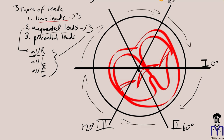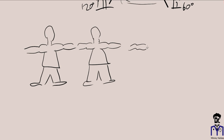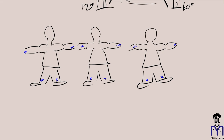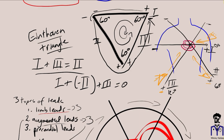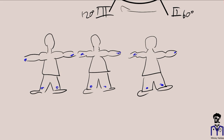With Goldberger's leads, one electrode is chosen to be positive and the average of the other two is considered negative. The same electrodes are used as before — nothing changes. This is convenient because we can get more slices of the heart without attaching more electrodes. Something must be done — or augmented — to the leads to increase the signal, hence the term 'augmented.'